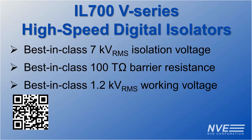Key features for NVE's new IL700V series include best-in-class 7 kilovolt isolation voltage rating, best-in-class 100 terohm barrier resistance, and best-in-class 1.2 kilovolt working voltage.